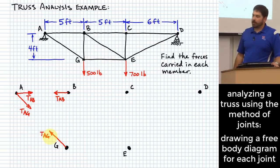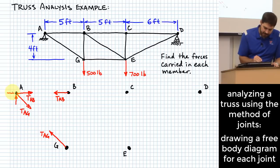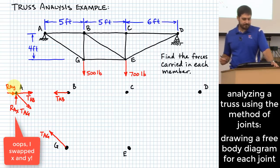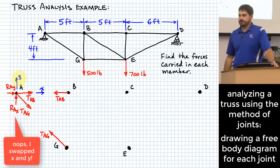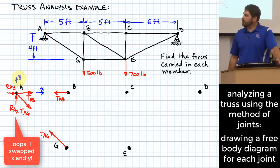Am I done with joint A? No — I need the reaction forces there as well. Because it's pinned, there can be two external reactions at joint A: RAX and RAY. That implies I've chosen a coordinate system.